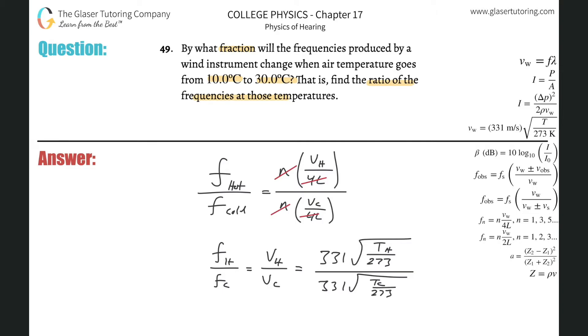If you do some simplifications, the 331's cancel. You can put both of these under one radical, and then the 273's will also cancel. You're left with a nice simple formula: the relationship is just the square root of the hot divided by the cold. We need these in terms of Kelvin though, because the divisions will not be equal to one another.